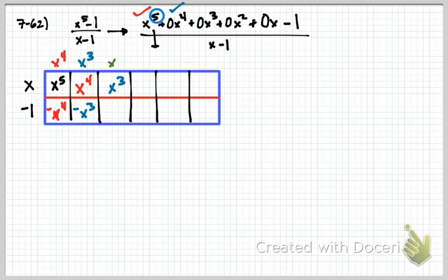x to the 3rd will go here to make it 0x to the 3rd. So now we have x squared. You're probably noticing a pattern here. This will be positive x squared. Again, we need to get 0. So we get x, negative x.